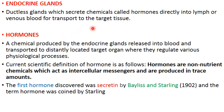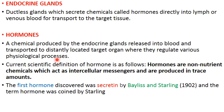Now, how do we define hormones? Hormones are chemicals produced by endocrine glands that pour their secretion into the blood and are transported to distantly located target organs — organs that respond to the hormone's presence in the blood and are located far away from where the hormone is actually released — and there they regulate various physiological processes.